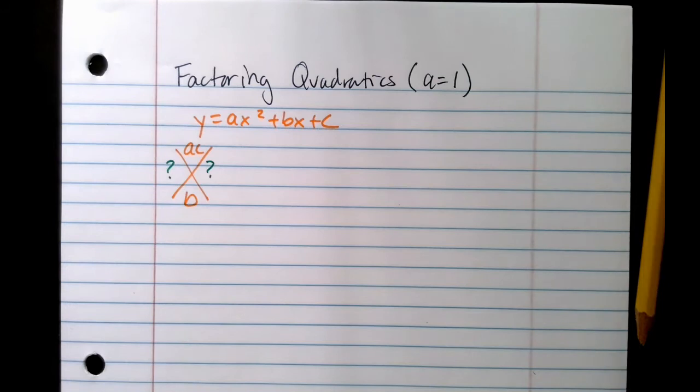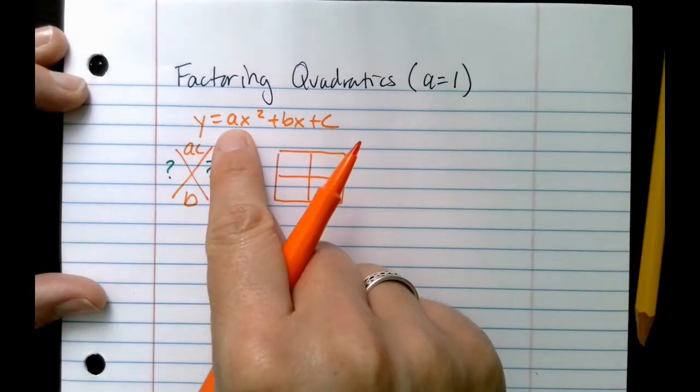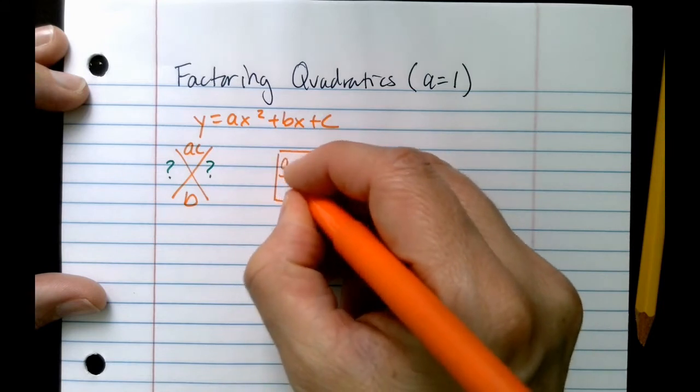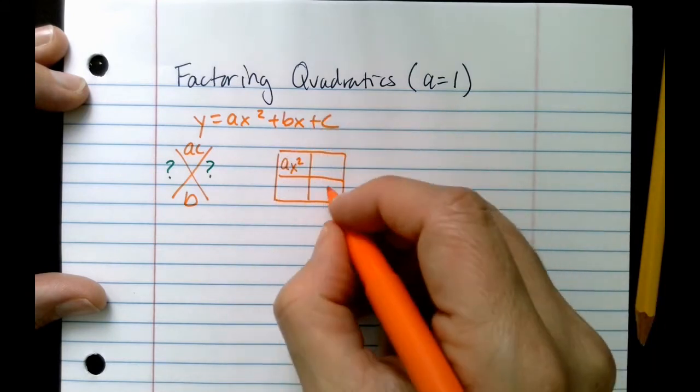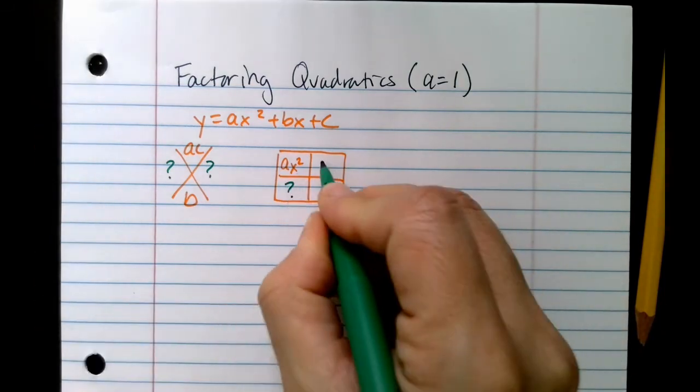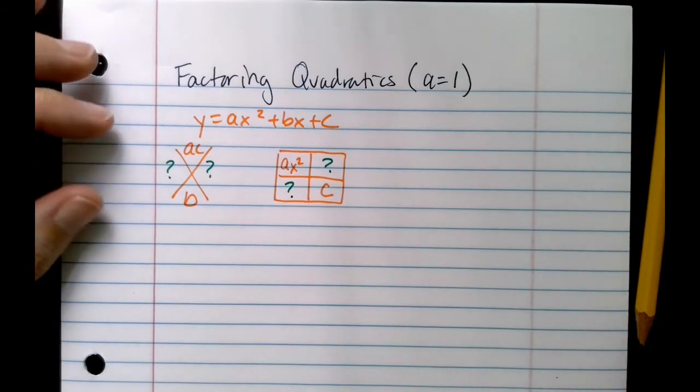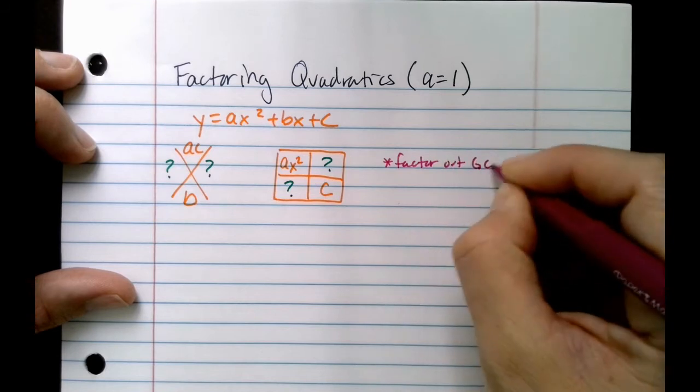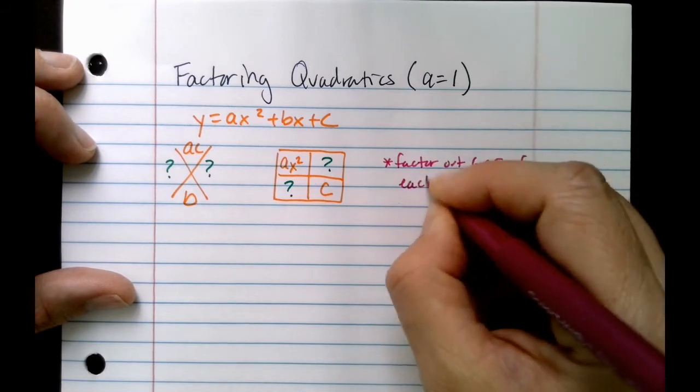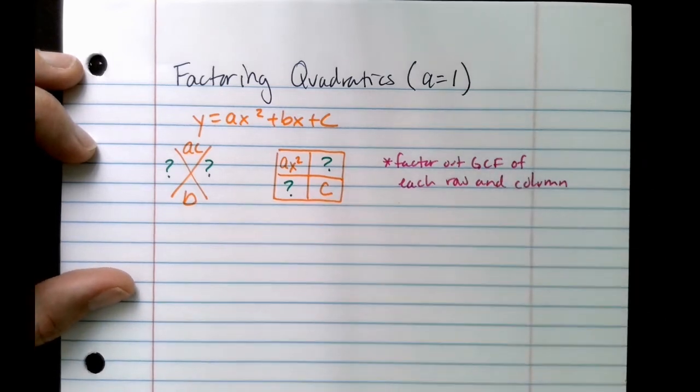Once you do that, then you're going to draw a box. Now that you have your box, you're going to put the leading term ax squared in the first box, and the constant goes in the last box. What goes in the other two boxes are the numbers you come up with there. And what you're going to do is you're going to factor out GCFs of each row and column. So the GCF is just the greatest common factor.